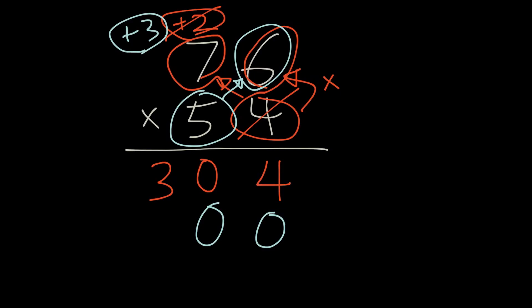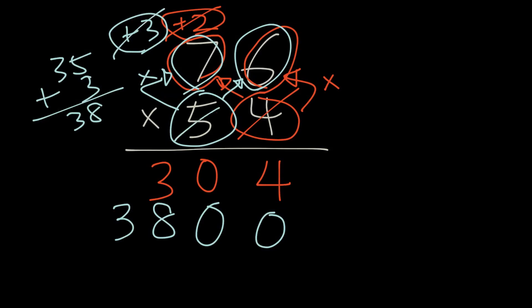So, the 3 will be added to the next multiplication. So, 5 times 7 is 35 plus the 3 is 38. So we'll put 38 here. And now that this is done, we're going to go across that all too.